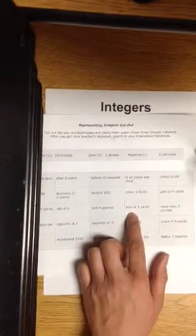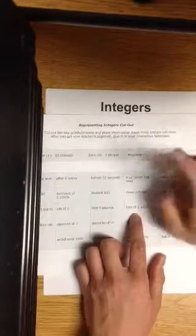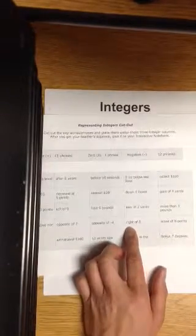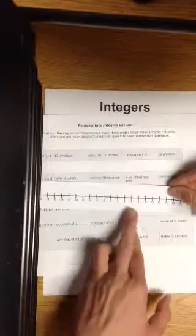Below, negative. You're going down three floors, negative. A football team had a loss of two yards, oh that's the 49ers, negative. Right of zero, here's zero, right of it is positive.